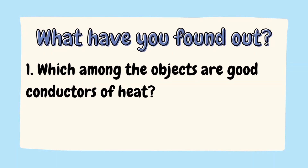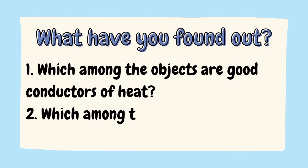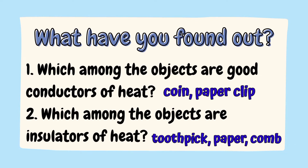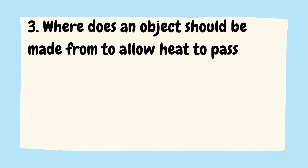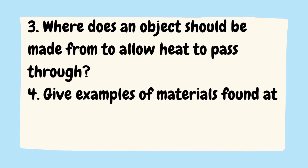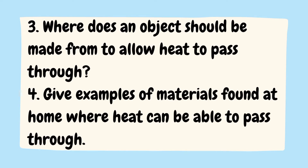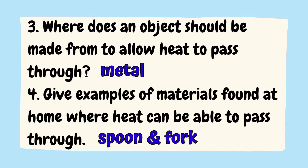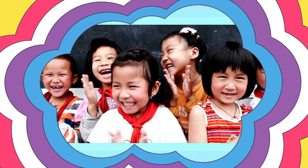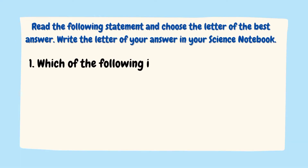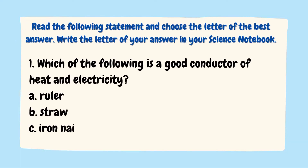Let us answer the questions. Which among the objects are good conductors of heat? Which among the objects are insulators of heat? Where does an object should be made from to allow heat to pass through? Then give examples of materials found at home where heat can be able to pass through. Do we have the same answer? Well, that's nice! Now, let us answer this. Read the following statement and choose the letter of the best answer. Write the letter of your answer in your science notebook.